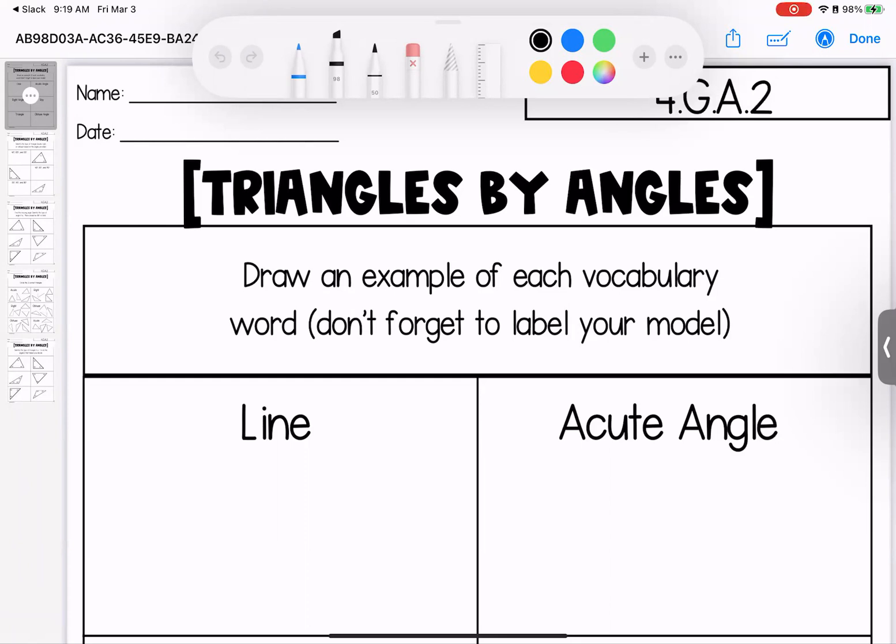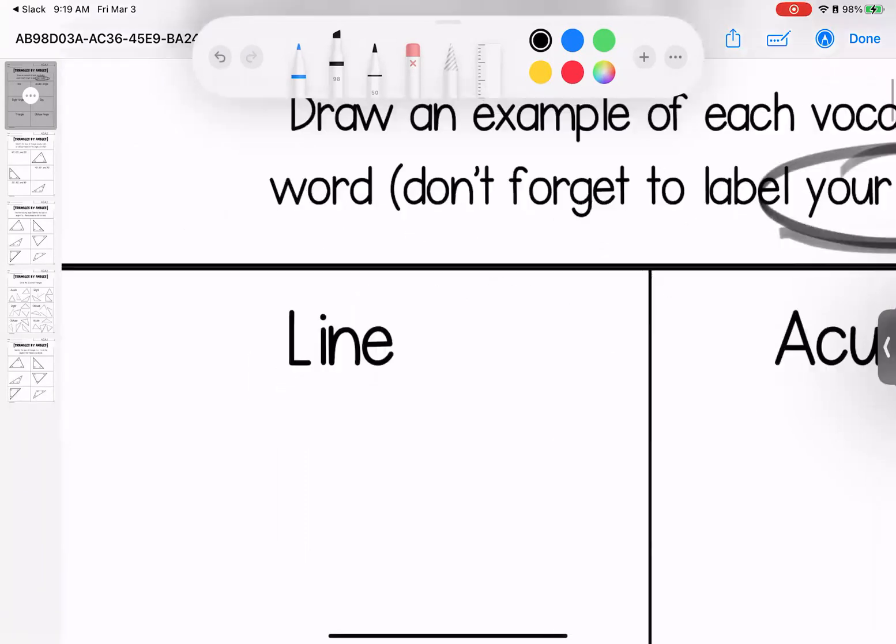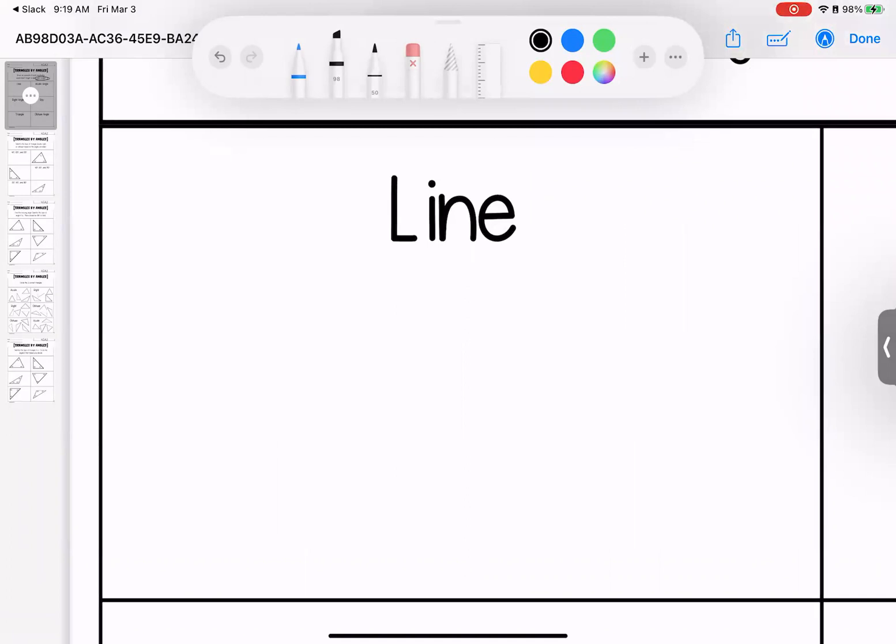Our first page is a refresher from last week, making sure that we remember the different types of vocabulary. Remember that we need to label our models because everything gets a name based on its points. If you have trouble with this, please go look back at your picture dictionary. If you have any trouble locating that, have your grown-up send me a message.